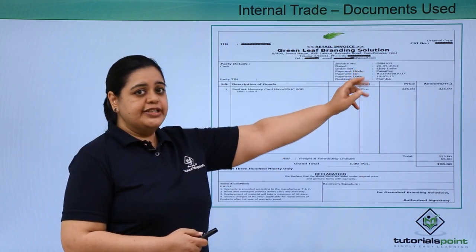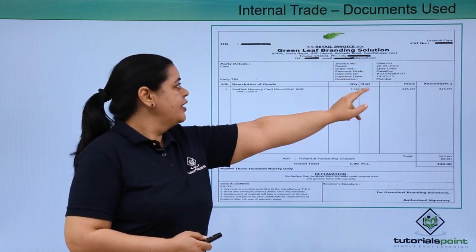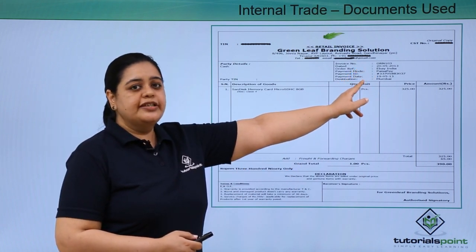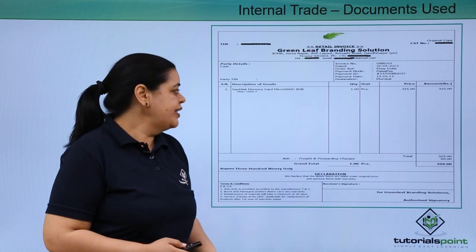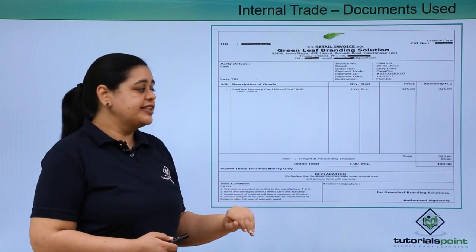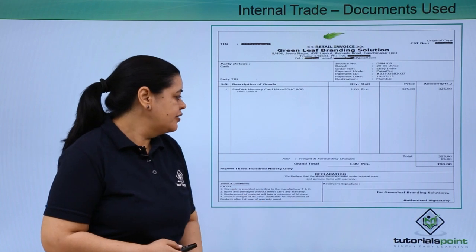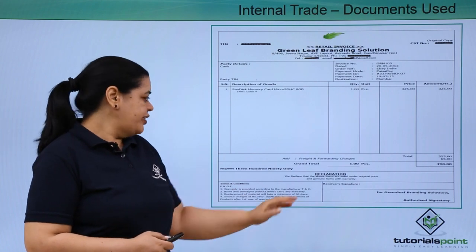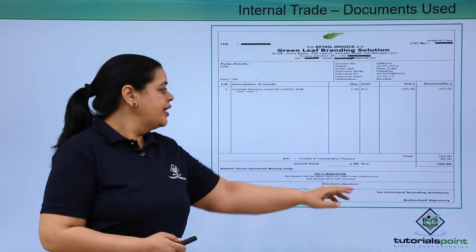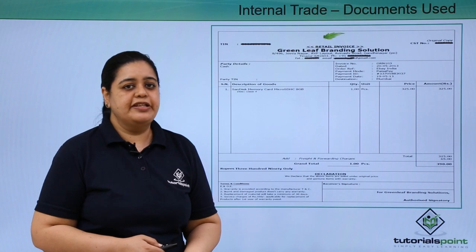The invoice includes details such as the invoice number, the date, the payment mode, the payment ID, and the description of the goods. It also requires the authorised signatory's signature and the amount that is payable.